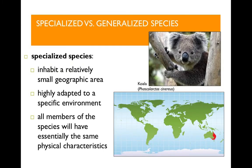Now there are two basic kinds of species in the world: specialized species and generalized species. A specialized species lives in a relatively small geographic area and is highly adapted to that specific environment. Because they live in this small area and are highly adapted, all members of the group will have basically the same physical characteristics. A good example of a specialized species would be the koala. Koalas only live in eastern Australia and are highly adapted to eating one particular type of food — eucalyptus — so they must remain in the area where eucalyptus naturally occurs. And koalas, for the most part, all look alike.